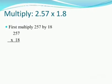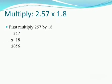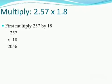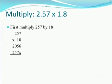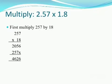Multiply 257 by 8. We get 2056. Now multiply 257 by the tens digit, that is 1, and we get 257 followed by a cross.